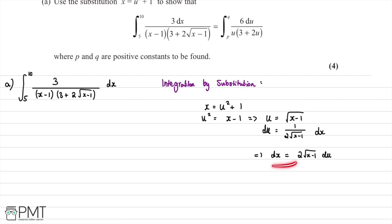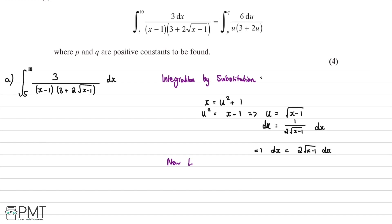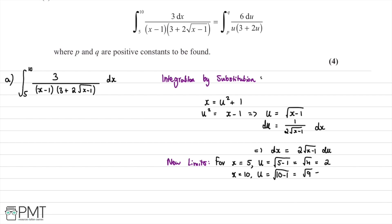Now we find the new limits. Our current limits, 10 and 5, are with respect to x, so we need to convert them to u. For x equals 5, u equals the square root of 5 minus 1, which is the square root of 4, equal to 2. For x equals 10, u equals the square root of 10 minus 1, which is the square root of 9, equal to 3. So our new limits are 2 and 3.